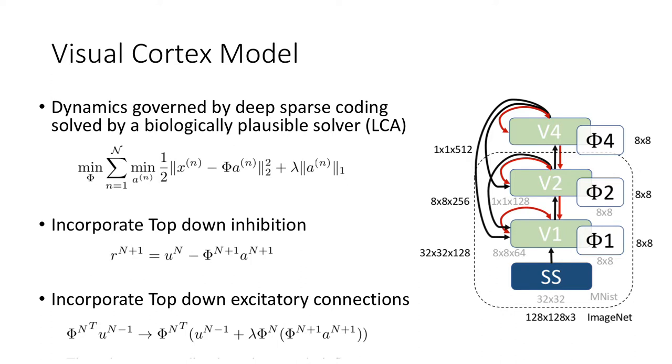Finally, we learn a sparse representation in the hierarchical cortex model using sparsity, lateral inhibition, and top-down feedback.